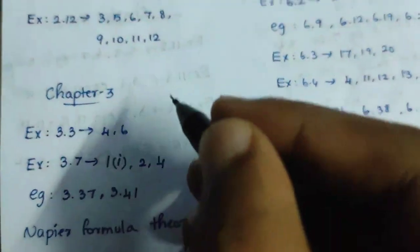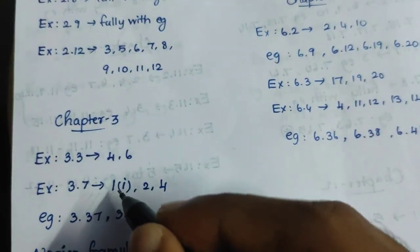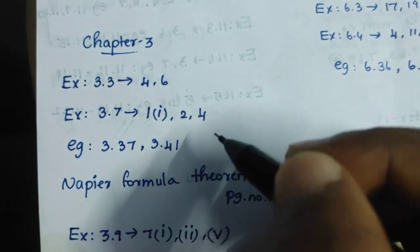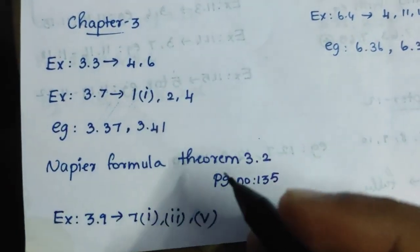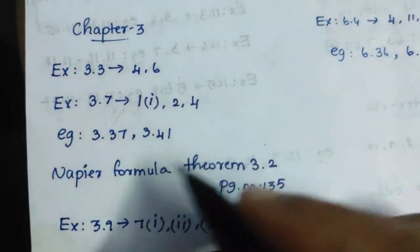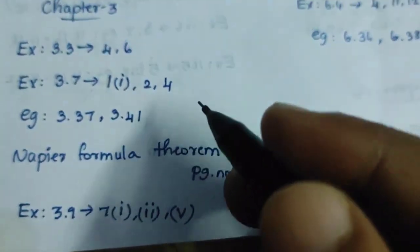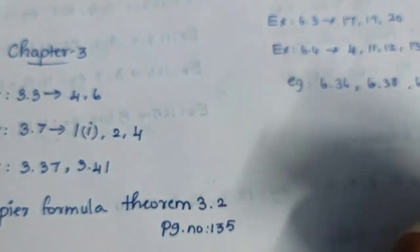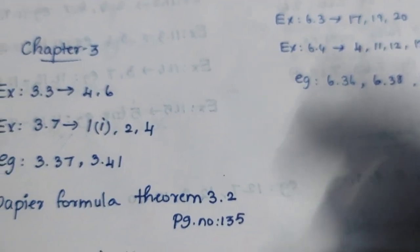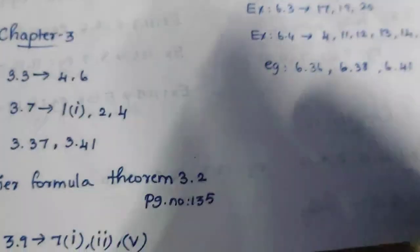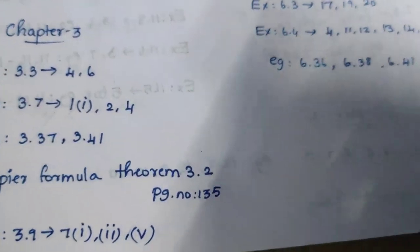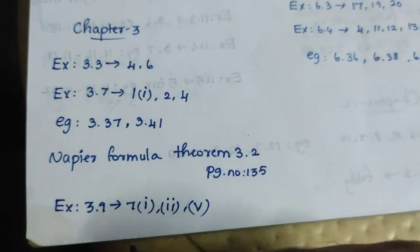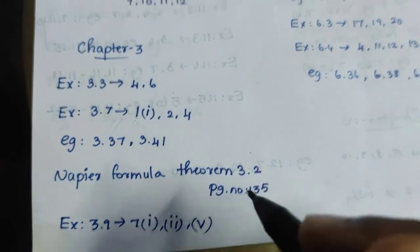Chapter 3. Exercise 3.3, 4, 6. Exercise 3.7, first and second and fourth. Example 3.37, 3.41. Napier formula theorem 3.2, page number 135. Third chapter of algebra. If you need to know, you should test Exercise 3.5. Exercise 3.9, 7, 1st, 2nd, 5th. This is the third chapter.